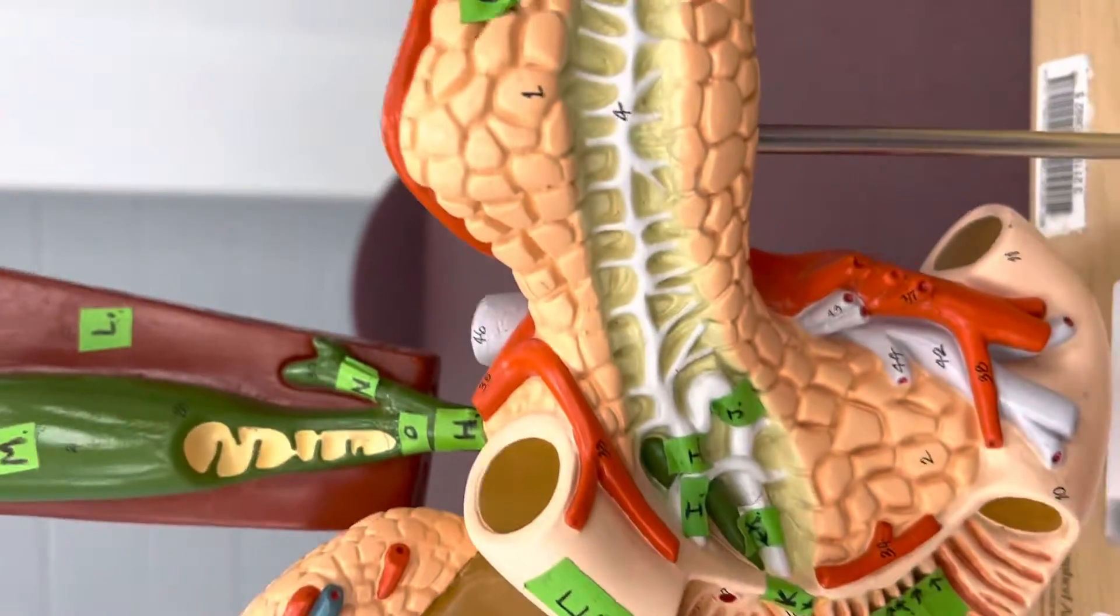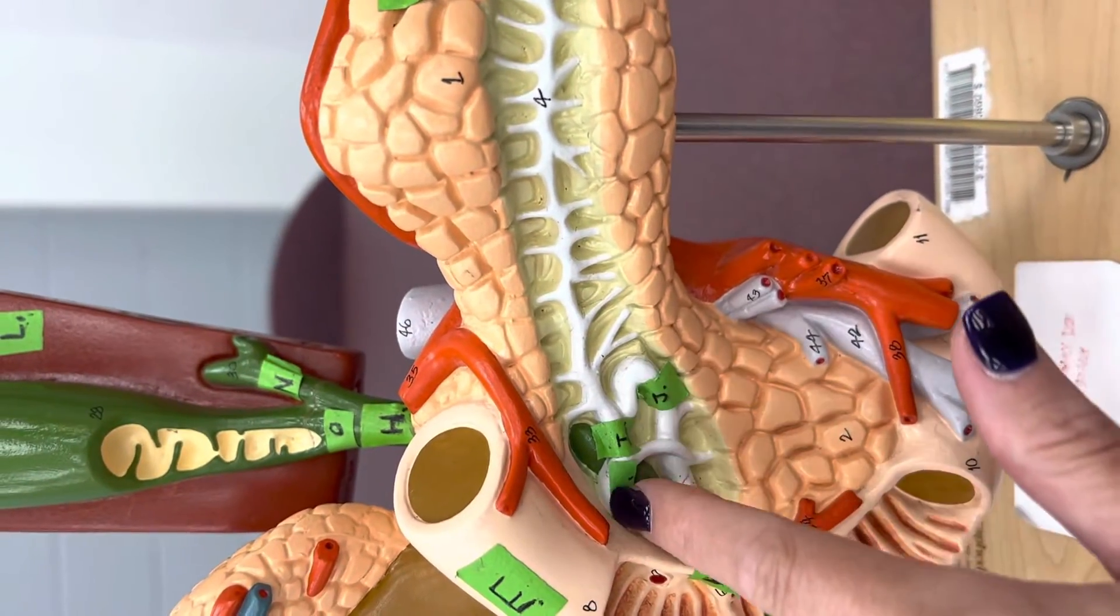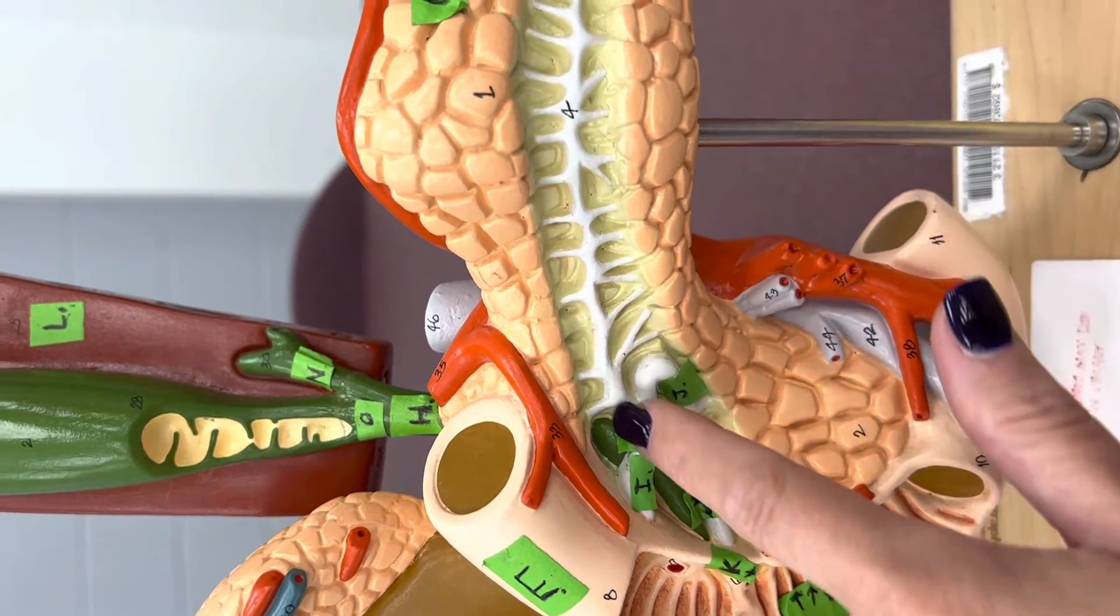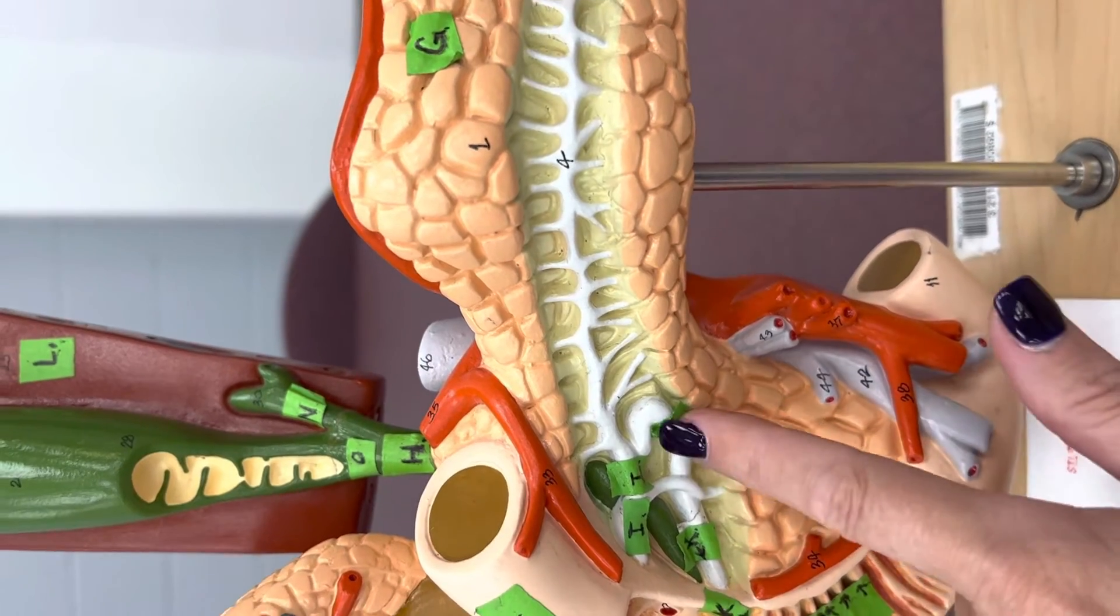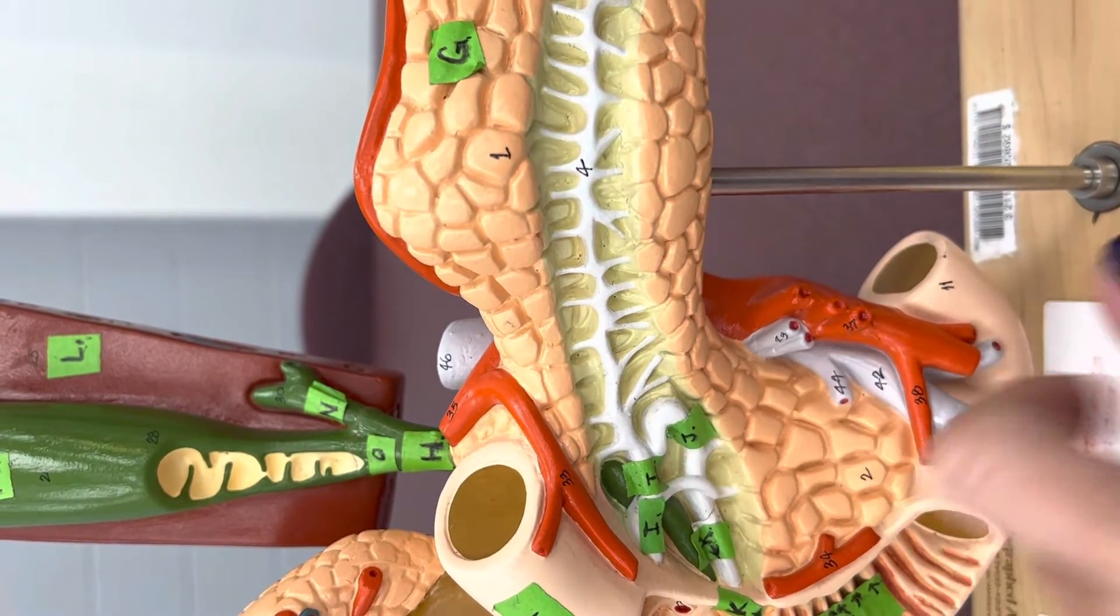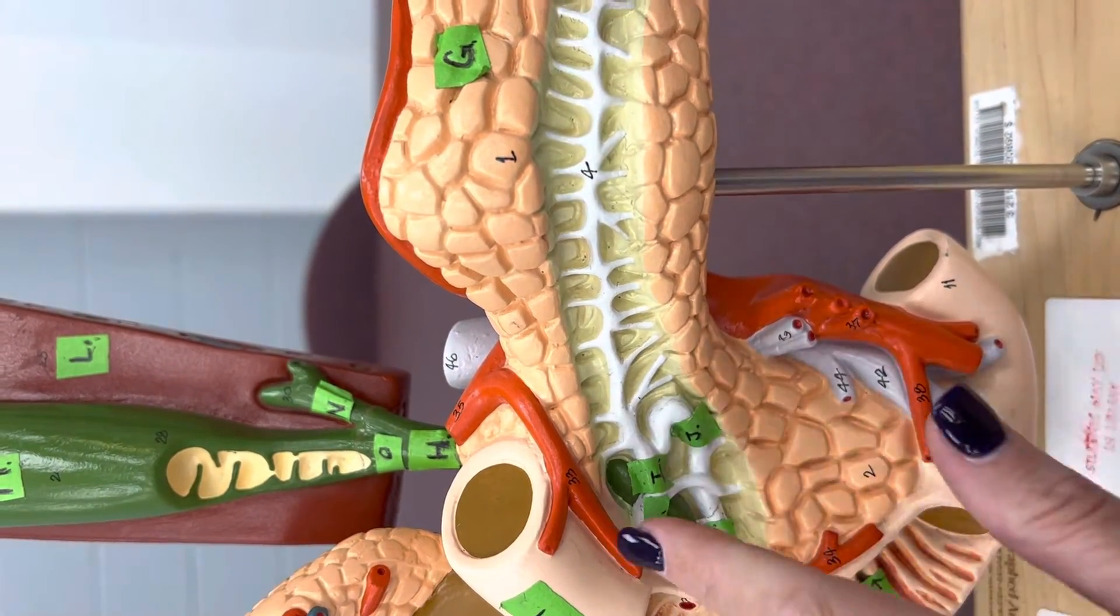I is the accessory pancreatic duct. J is the main pancreatic duct. You can see it's a little bit bigger than the accessory.